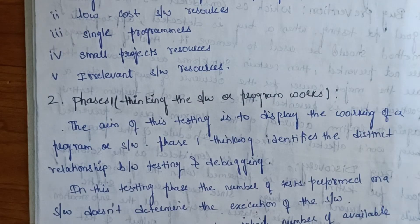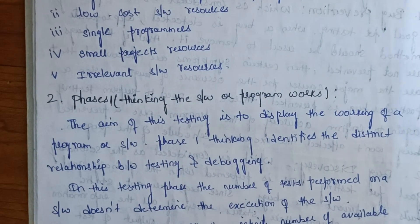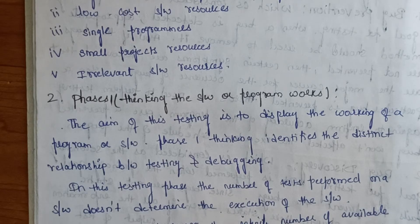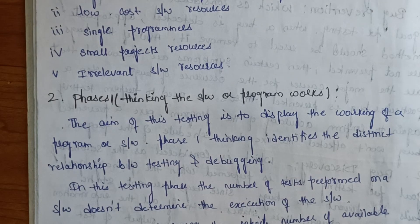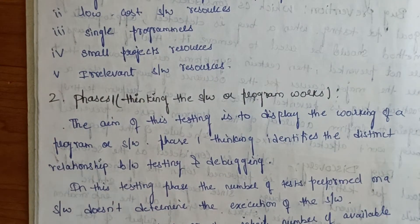If a single test among the infinite number of available tests fails, then the tester concludes that the software will not be executed, even if subsequent tests make its execution possible. That means if there is an infinite combination of the software, it will not be possible.